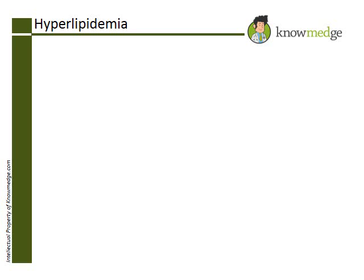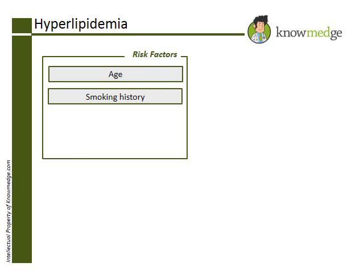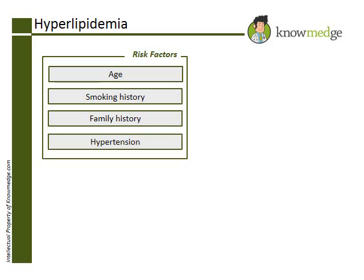Patients are given a goal LDL based on their Framingham risk. Some risk factors include age, smoking history, family history for heart disease, and hypertension.